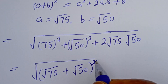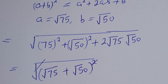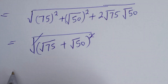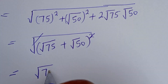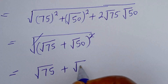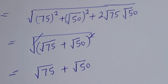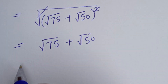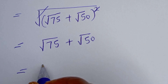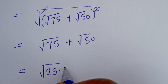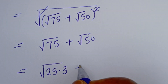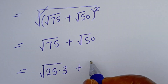Then the outer square root will cancel with the inner squared. This is equal to square root of 75 plus square root of 50. Then we can still expand this — square root of 75 plus 50 can be written as square root of 25 multiplied by 3 plus square root of 25 multiplied by 2.